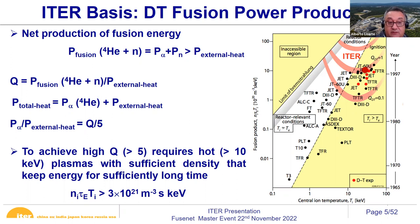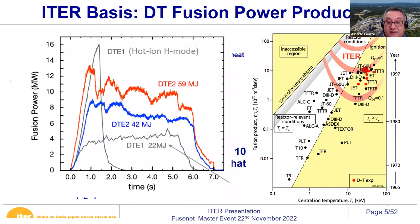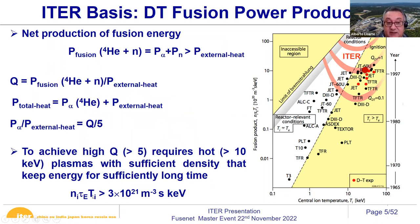This means the heat ITER's plasma produces is twice the external heat, so the plasma is dominated by fusion production. To achieve that, we need a plasma temperature of 100 million degrees — 10 keV — with sufficient density. This shows the progress toward the ITER domain. Typical experiments today have electron temperatures lower than ion temperatures, while ITER operates where they are equal. The recent JET result announced this year produced 59 megajoules of fusion energy. What we are still missing is sufficient energy confinement time, which requires a larger machine.